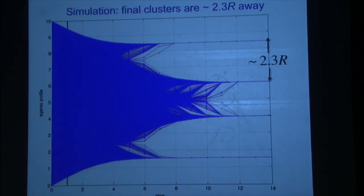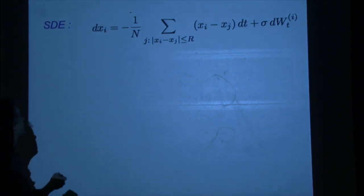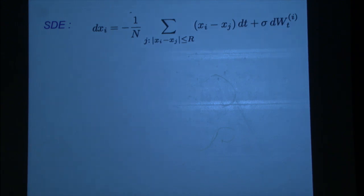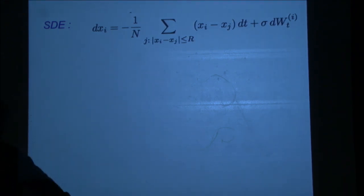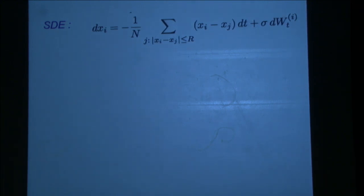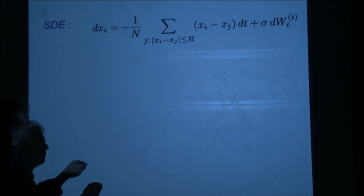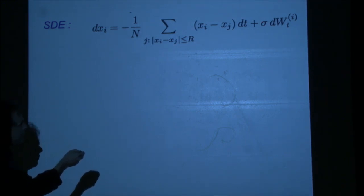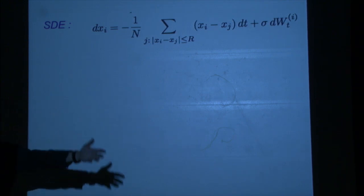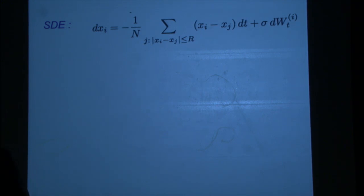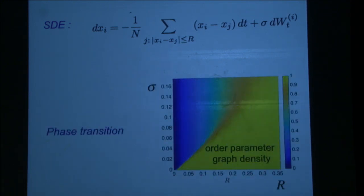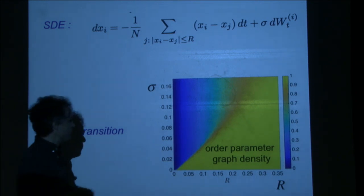We add some Brownian motion — a Wiener process. Each particle is pulled toward its friends within distance r, and at the same time it jiggles a little bit. If it were not pulled at all and only jiggles, it's a diffusion process. We couldn't prove anything about that, but we could draw interesting pictures that show a clear phase transition.